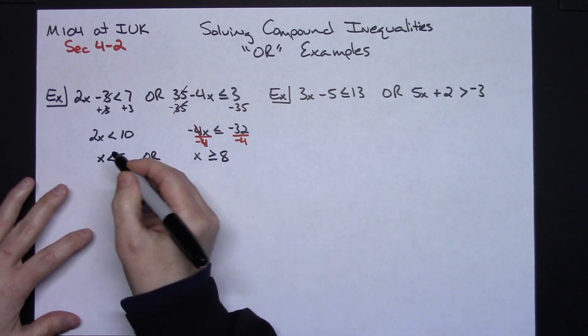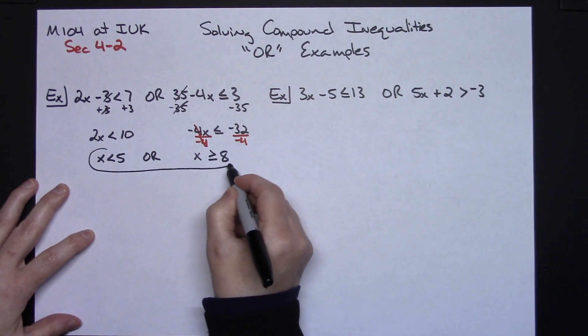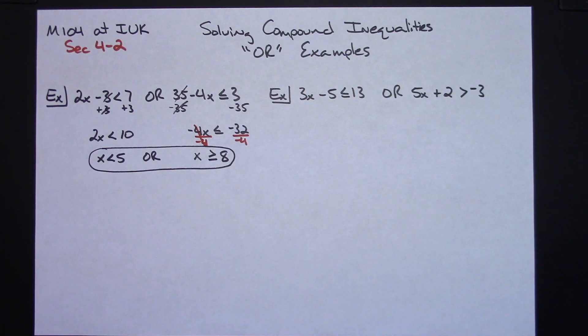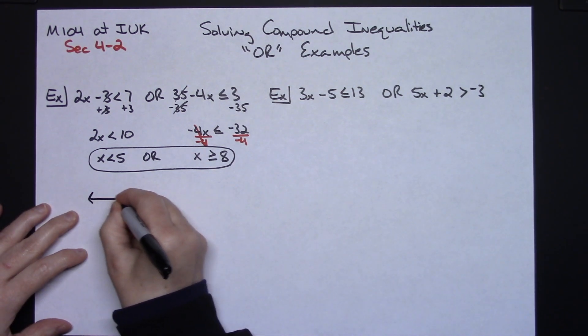If you are in a high school algebra 1 class or maybe an algebra 2 class, you might possibly be allowed to just stop right there and leave your answer like that. But in a college algebra class, what we're going to do is we're going to actually go down and put this solution in interval notation. Now probably the easiest way to do this on ORs is to picture it on a number line and just see what happens.